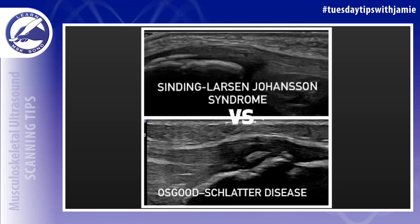What is the difference between Sindig-Larsen-Johanssen syndrome and Osgood-Schlatter disease in the pediatric knee? They're both common conditions in growing adolescents that worsen during growth, sports, and physical activity, and occur more commonly in children who play sports.